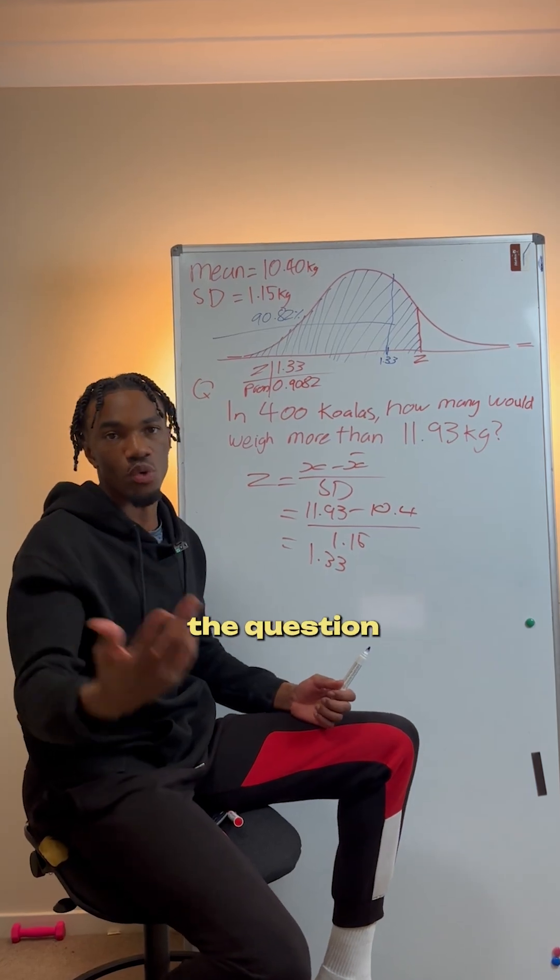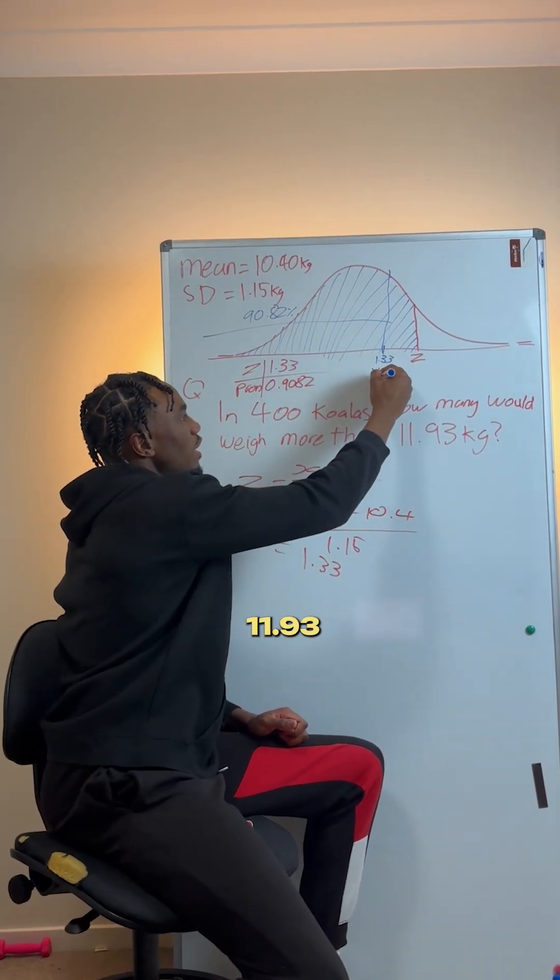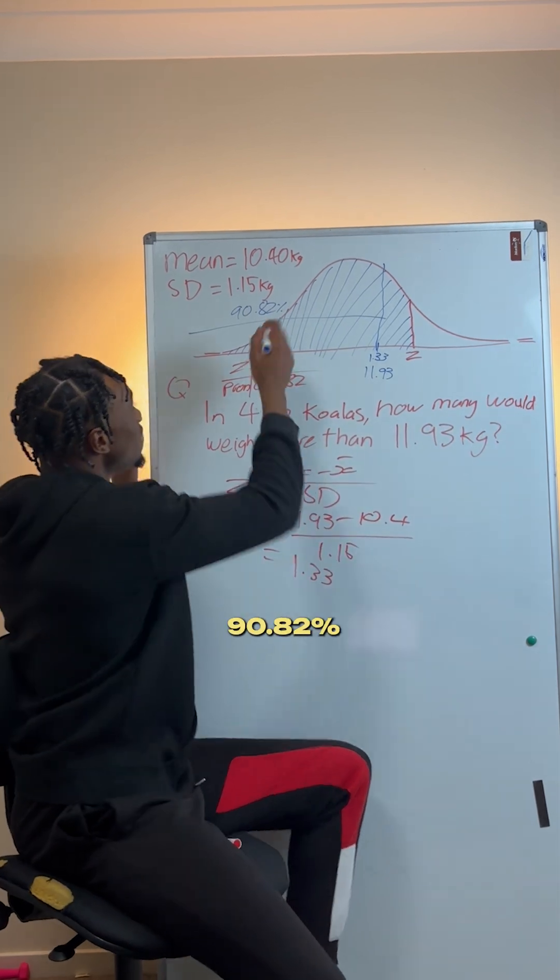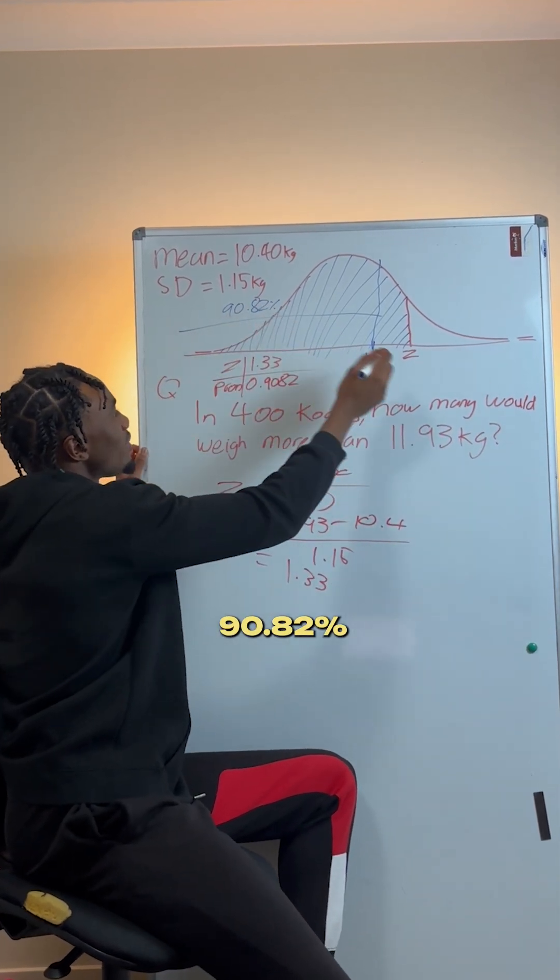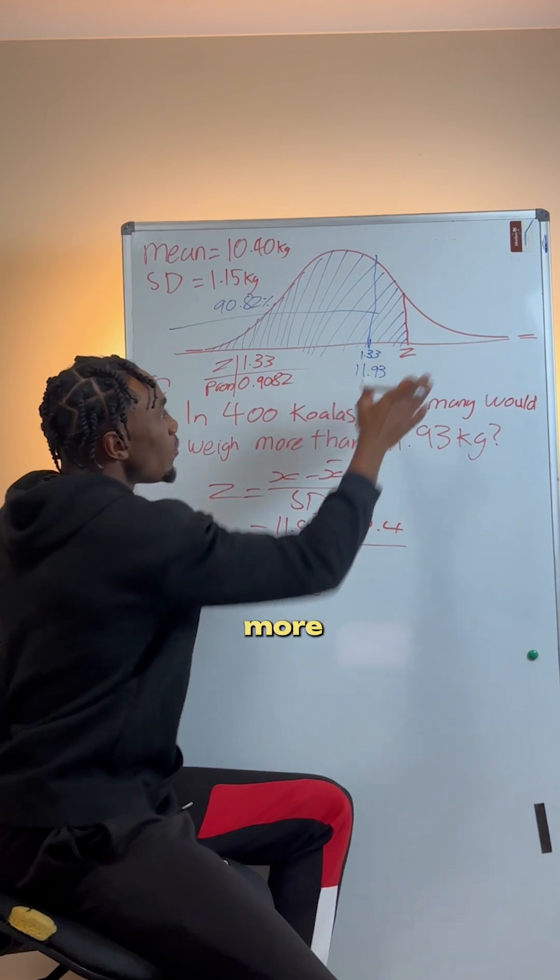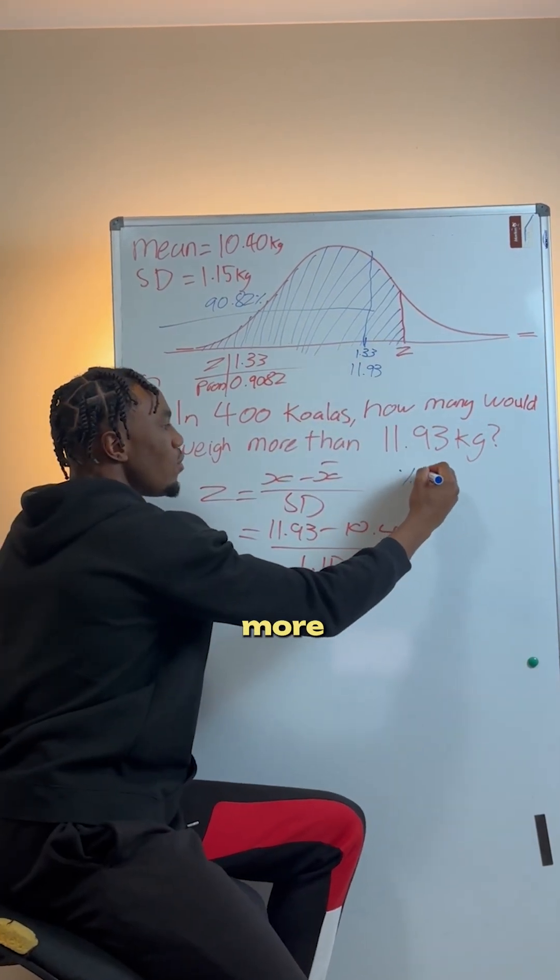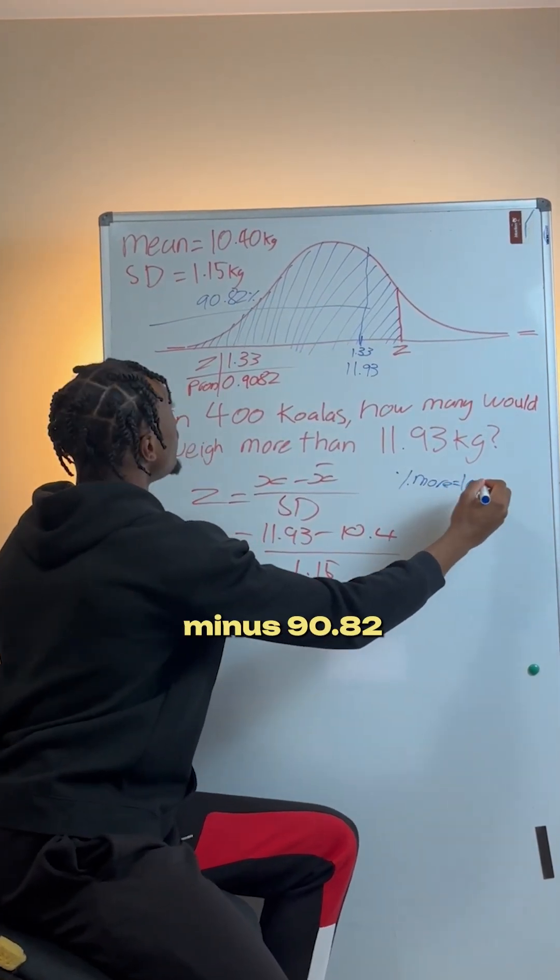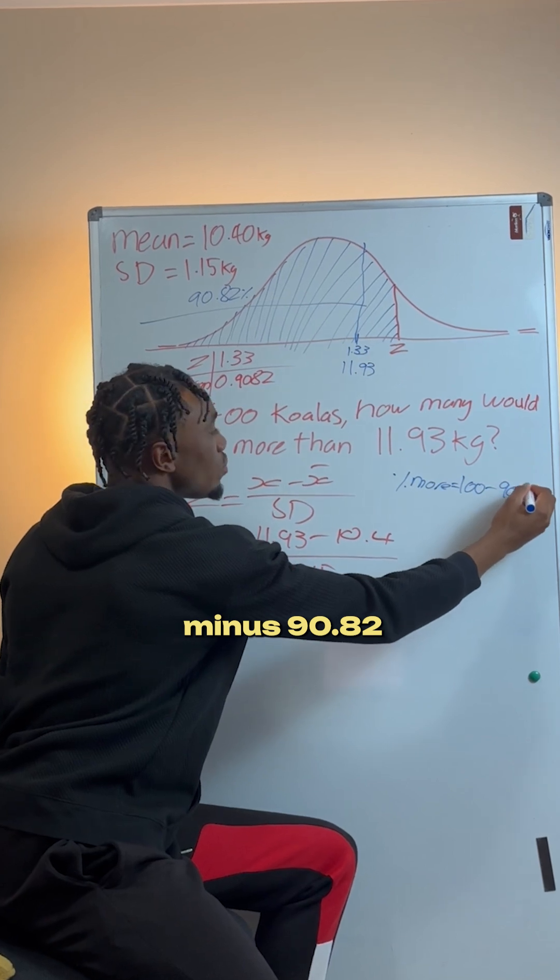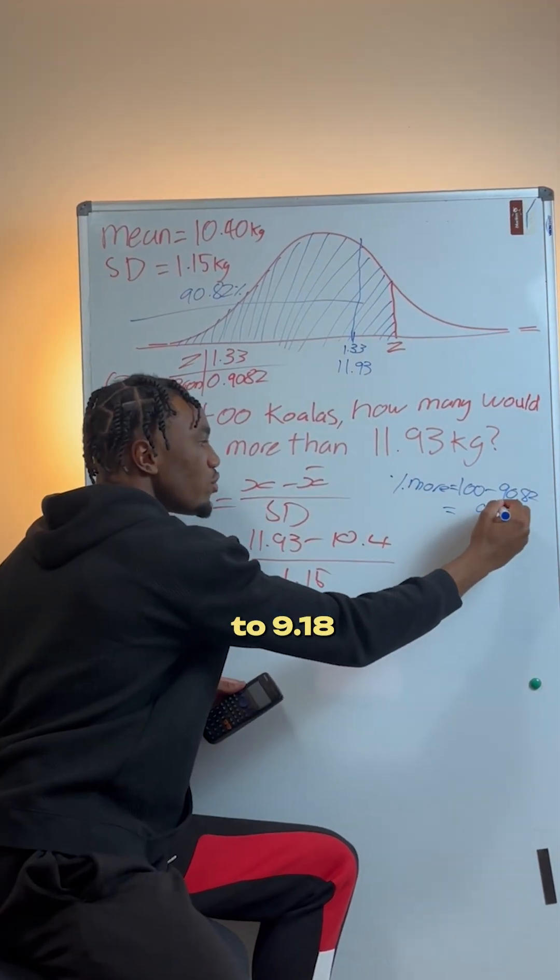After that, we're just going to finish off the question. This is the corresponding score for 11.93. How much would weigh more than that? If 90.82% are in here, how much are going to weigh more than this? You can say percent more equals 100 minus 90.82. That equals 9.18.